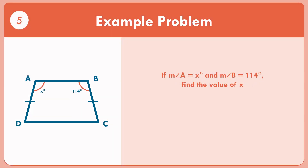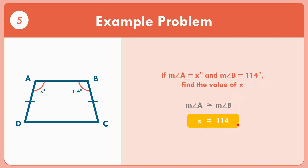Example number five: if the measure of angle A is x degrees, and the measure of angle B is 114 degrees, find the value of x. Since base angles are congruent, the measure of angle A is congruent to the measure of angle B. So x equals 114. The value of x is 114.